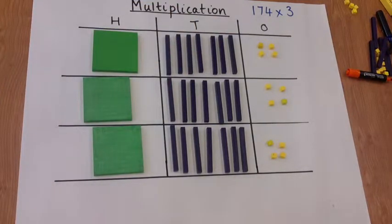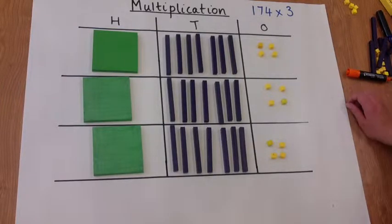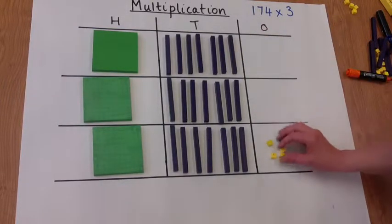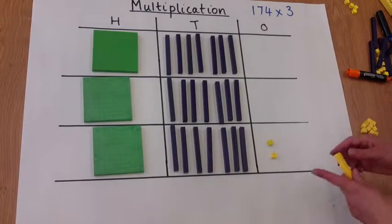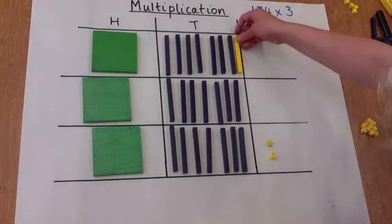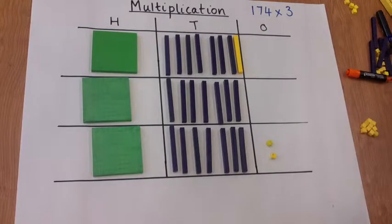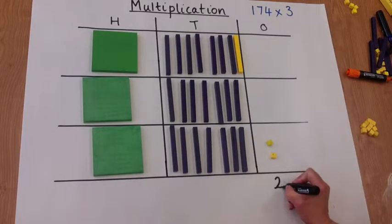If we start with the ones column again, we've got three groups of 4, which makes 12. So we're going to regroup 10 ones into a 10, and that leaves us with two ones.